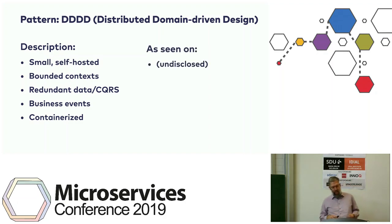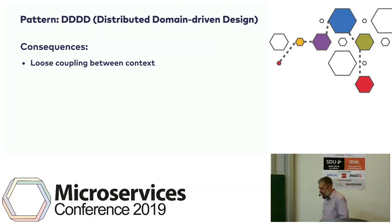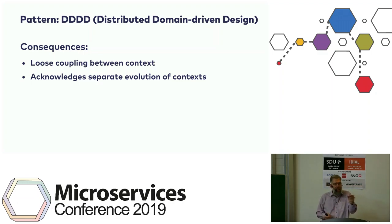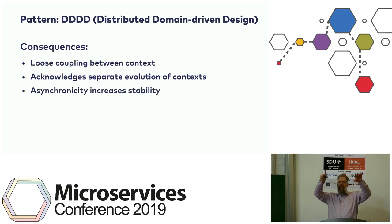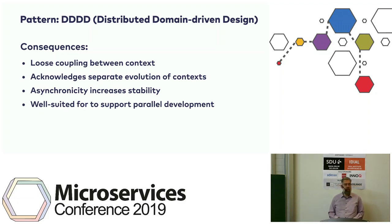There are tons of companies doing this — it's a very popular approach. The loose coupling enables separate evolution of each context, with different and meaningful release cycles. It's not a tiny part that can't be released on its own; it's a larger thing that provides value on its own to callers or end users. Asynchronicity between these things improves stability — you don't have to have everything running simultaneously to get a successful call. It's also very well suited for parallel development, which is a key benefit here.